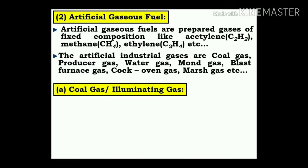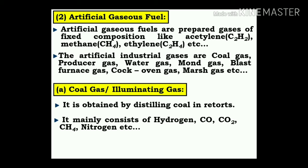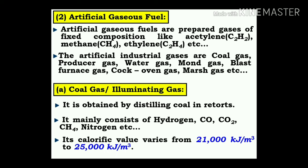Coal gas, or illuminating gas: it is obtained by distillation of coal in a retort. It mainly consists of hydrogen, carbon monoxide, carbon dioxide, methane, nitrogen, etc. Its calorific value varies from 21,000 kJ/m³ to 25,000 kJ/m³.